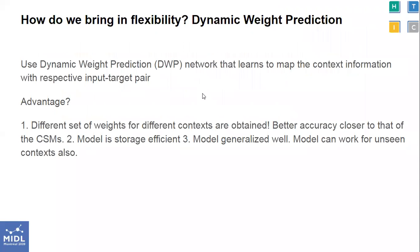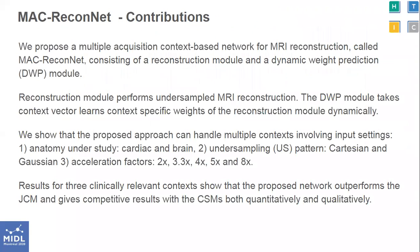In our network, we use a dynamic weight prediction network that learns to map the acquisition setting information with the respective input-target pair. This provides flexibility, storage efficiency, and generalizability in the reconstruction process.